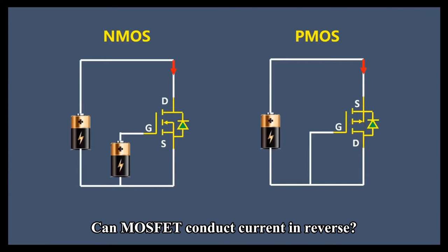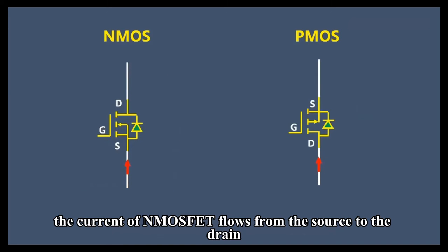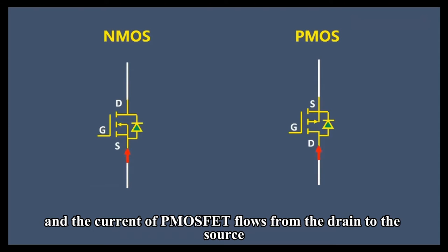Can MOSFETs conduct current in reverse? That is, can the current of an N-MOSFET flow from the source to the drain, and the current of a P-MOSFET flow from the drain to the source?